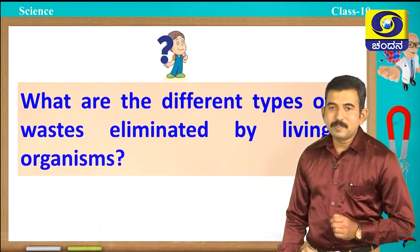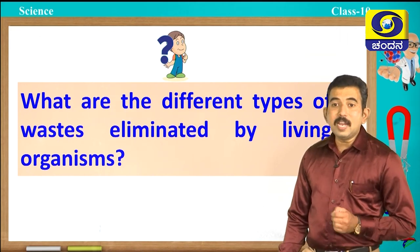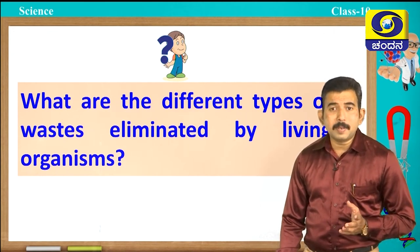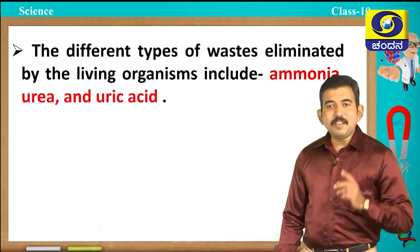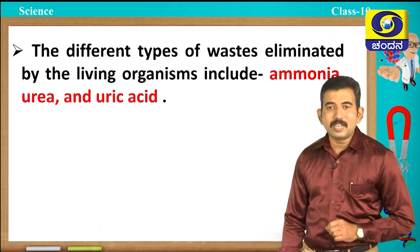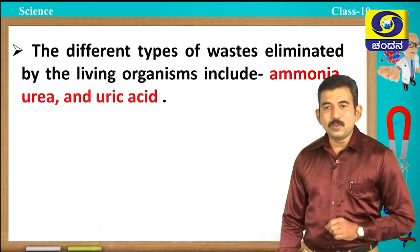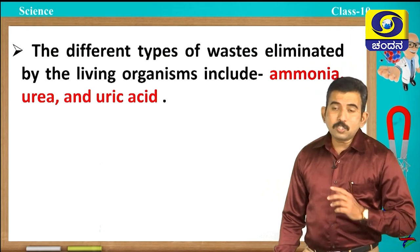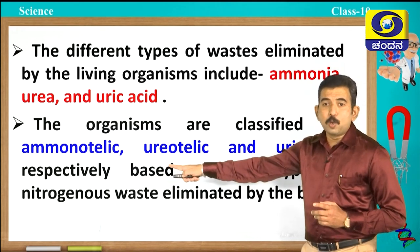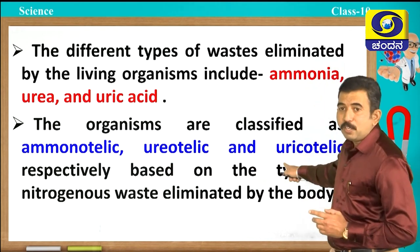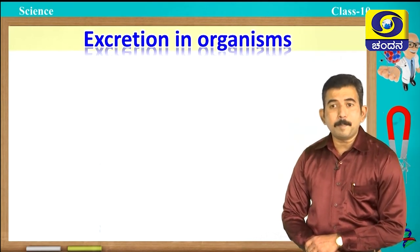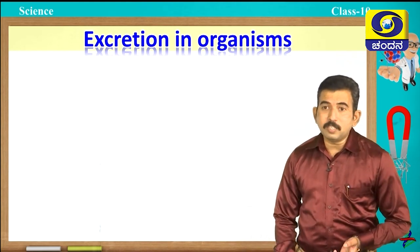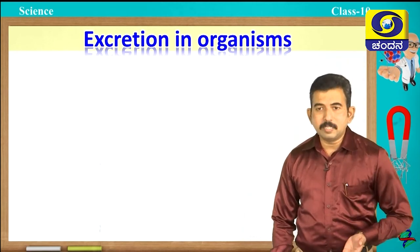What are the different types of waste eliminated by living organisms? The different types include ammonia, urea, and uric acid. Based on the type of waste eliminated, we classify organisms into three types: ammonotelic, ureotelic, and uricotelic. In unicellular organisms like amoeba, removal of waste takes place by simple diffusion. In lower multicellular organisms like flatworms, flame cells are used, while earthworms use nephridia for excretion.